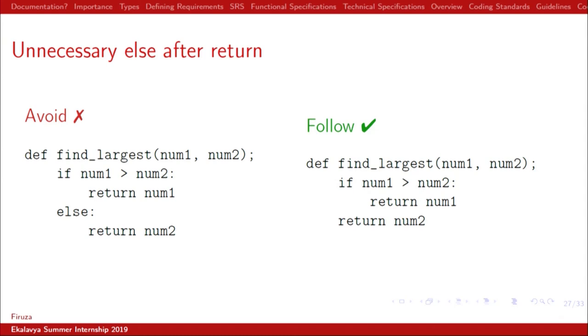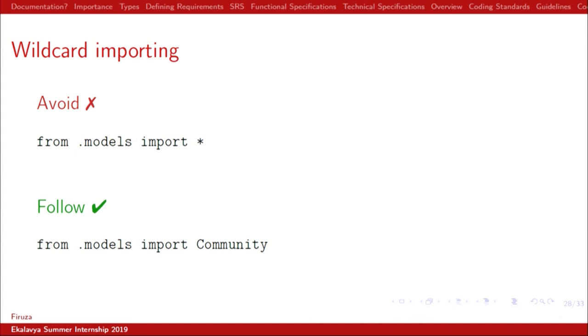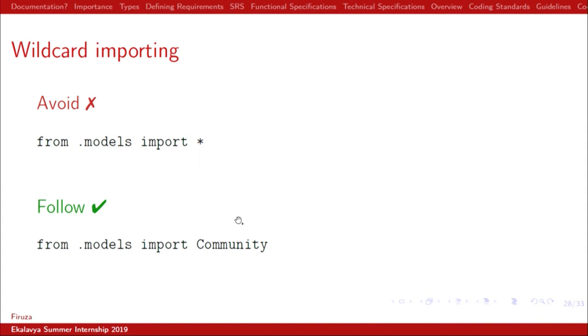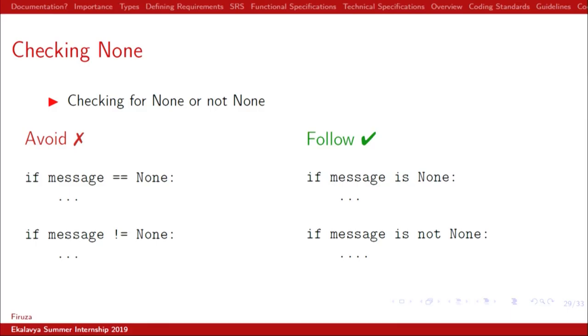Unnecessary else after return — this is specific to Python. If you have a function to find the largest element with a conditional statement: if number1 > number2 return number1, else return number2 — the else is not needed because if the if-statement doesn't execute, it will naturally return number2. Avoid using star for importing everything, because other developers won't know where a particular module was called. Avoid writing 'from .models import *'; instead write 'from .models import Community', so collaborators know you imported Community for a specific purpose. For checking None: instead of 'if message == None', just write 'if message is None' or 'if message is not None'.